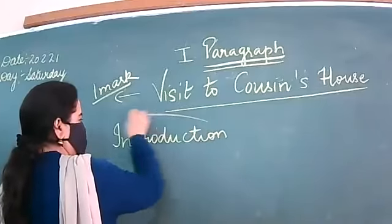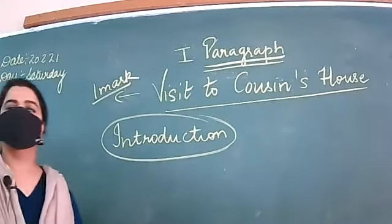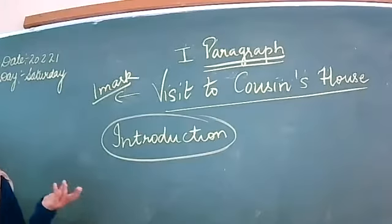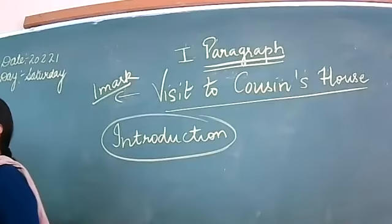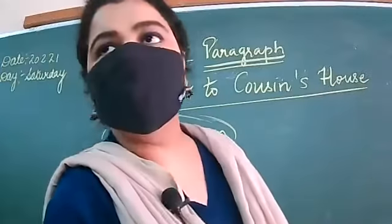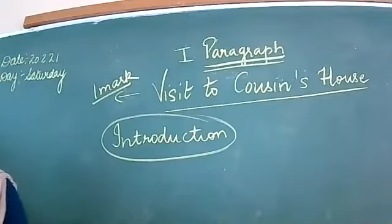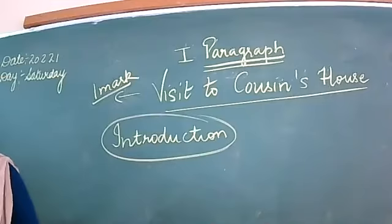Introduction means: 'A visit to any place gives us pleasure and knowledge' — whatever you want to write, but that is a very old line. You can try something else. That is also an old line; I think you people have been using it since class 2. Try to make something else related to the topic — cousin's house. Every child likes to go to his or her cousin's house; it's really fun. Try to write something different.